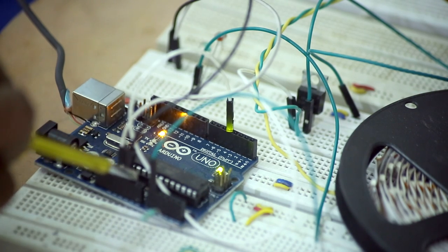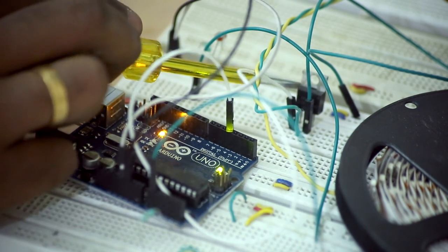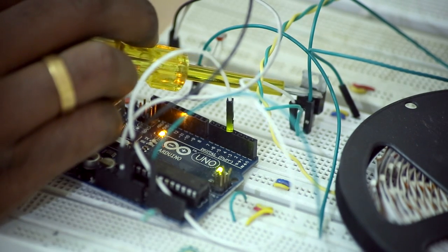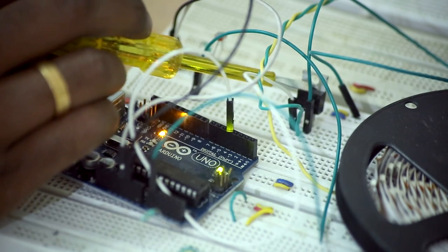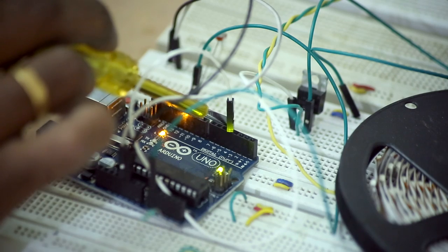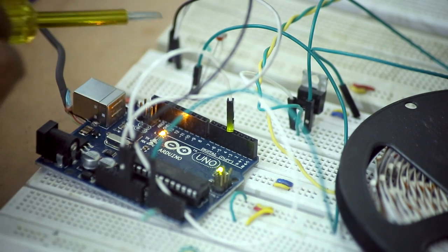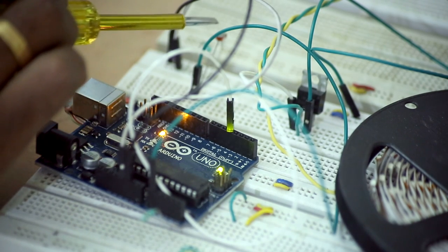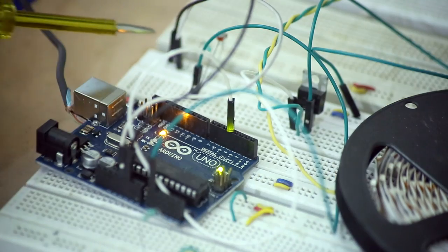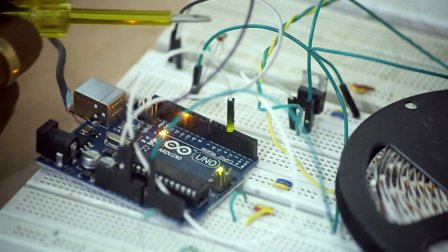The MOSFET I've used is an N-channel MOSFET, IRFZ44N. The source pin connects directly to the negative rail, the drain pin to the LED roll, and the gate pin to digital pin 4. The code I've written lights up the roll whenever the input value from the resistor goes below 100. You can find the schematics in the description.